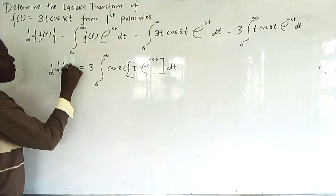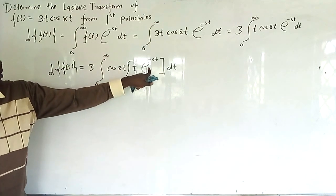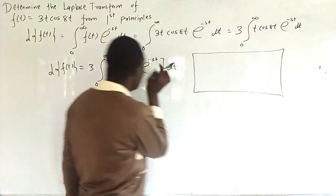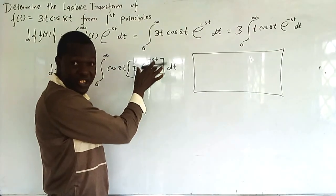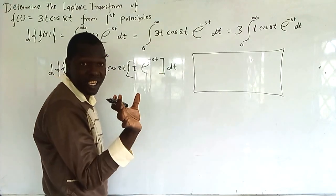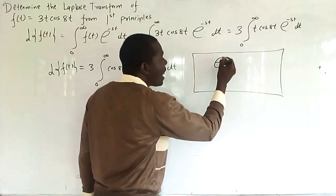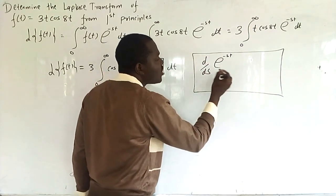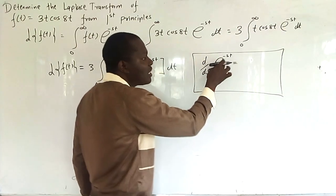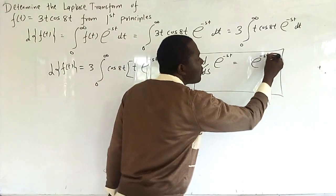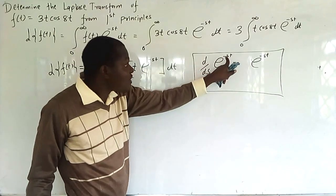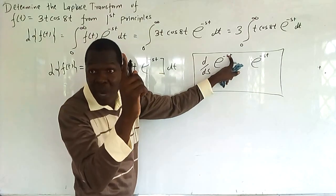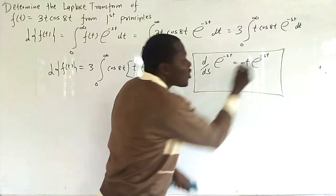This is the Laplace of f(t) of cosh. Remember when you are differentiating: when you take e^(-st) alone and differentiate with respect to s, e^(-st) remains as it is. The inner function gives you negative t, because negative t is the constant when differentiating with respect to s.